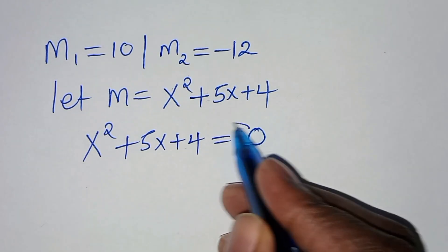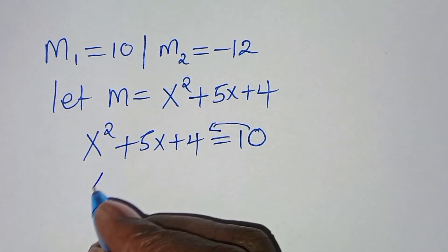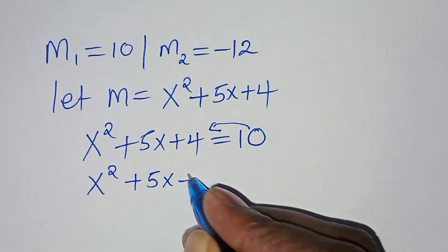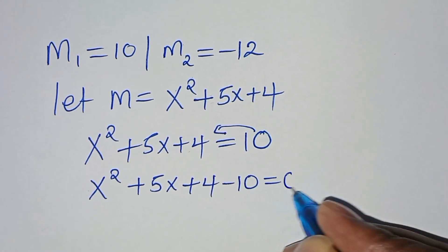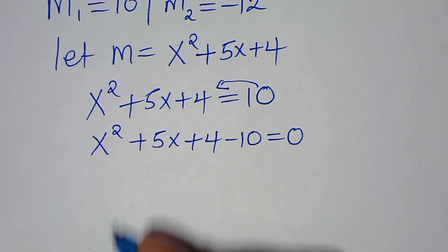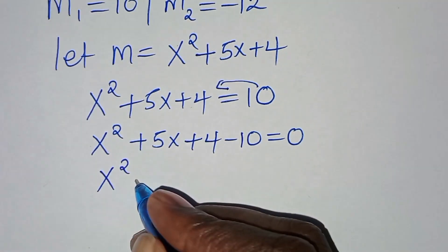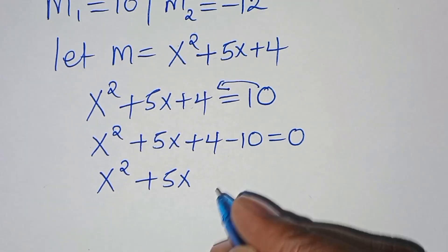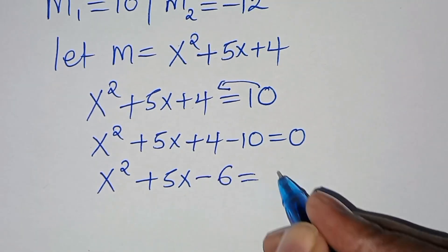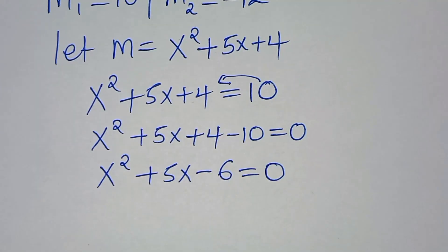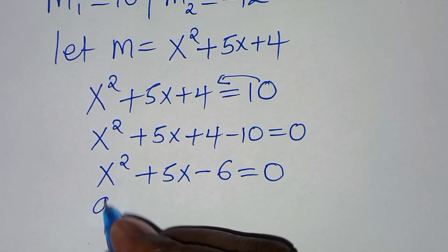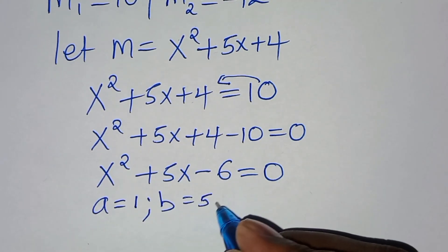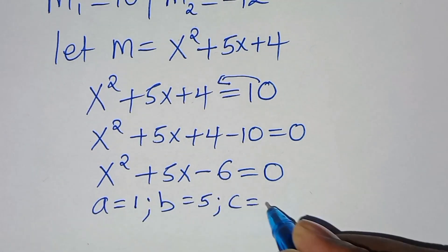Taking 10 to the left-hand side: x²+5x+4-10 = 0, which gives x²+5x-6 = 0. This is a quadratic where a=1, b=5, and c=-6.